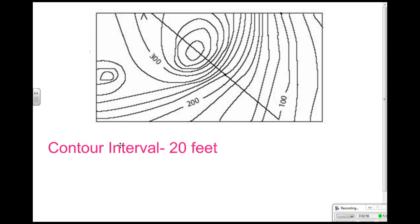Now I want to determine where the mountain is the steepest and where it is not so steep. If you look at the red circle, the contour lines are really close together, so I know that part of the mountain is going to be really steep. If I look at the green circle, the contour lines are more spread apart, so I know that the mountain is not going to have as steep a slope — it's going to be more gentle.